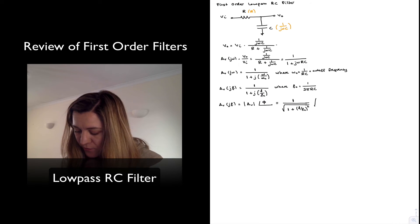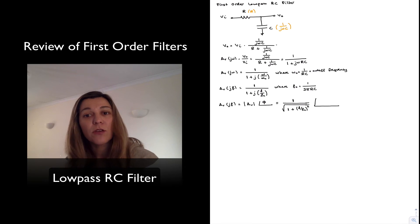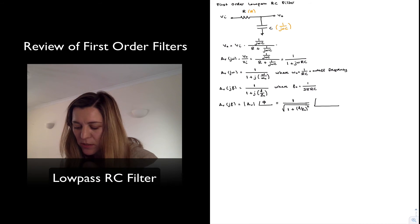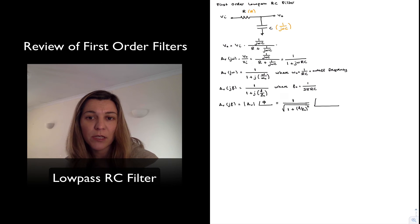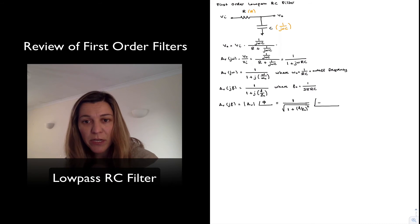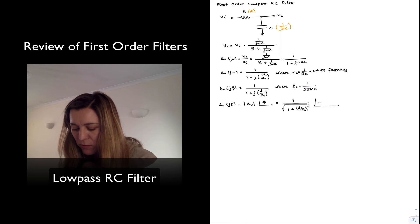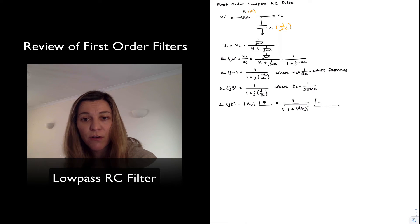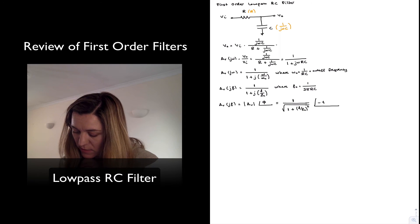The phase is equal to the phase of the numerator minus the phase of the denominator. Since the numerator is the real number 1, its phase is 0. So the phase equals 0 minus the inverse tangent of the imaginary part divided by the real part, which gives minus the inverse tangent of f divided by fc.